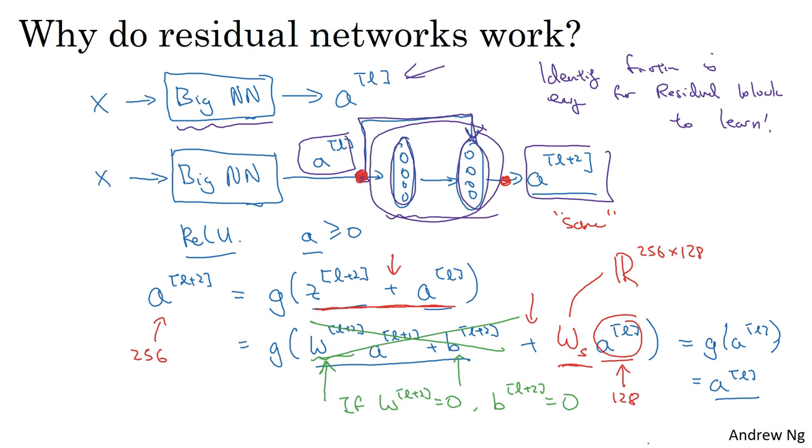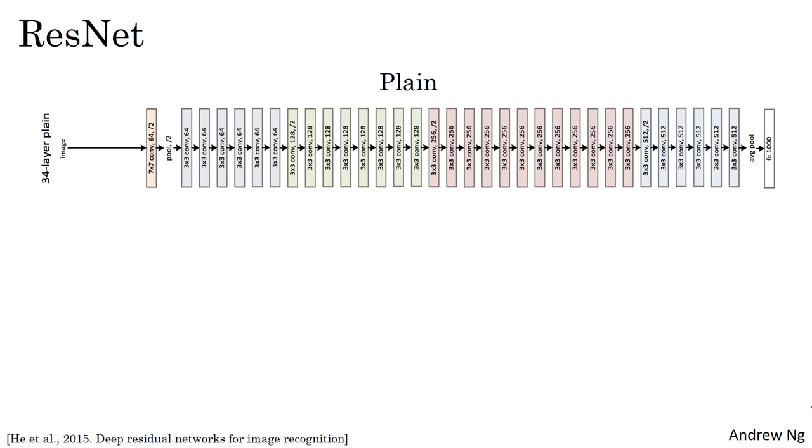So finally, let's take a look at ResNet on images. So these are images I got from the paper by He et al. This is an example of a plain network. And in which you input an image, and then have a number of conv layers, until eventually you have a softmax output at the end.